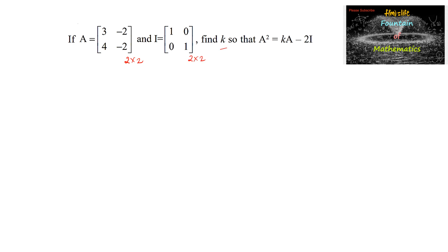Find the value of K so that A squared is equal to K times A minus 2 times I.